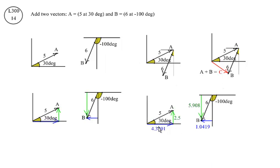The horizontal component of the A vector is 5 times the cosine of 30 degrees. The vertical component of the A vector is 5 times the sine of 30 degrees. The horizontal component of the B vector is 6 times the sine of 10 degrees — this small angle is 10 degrees, since 100 minus 90 is 10 degrees. The vertical component is 6 times the cosine of 10 degrees.